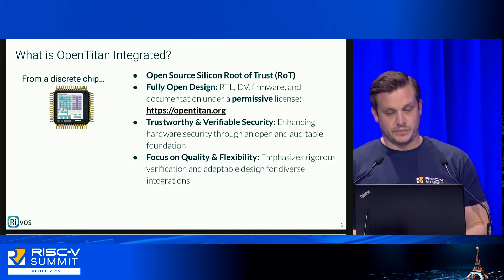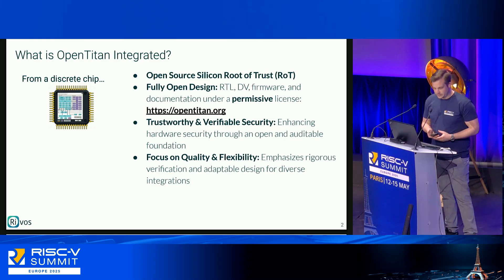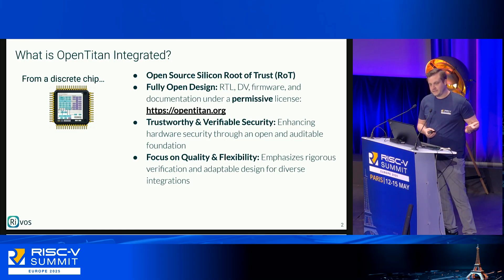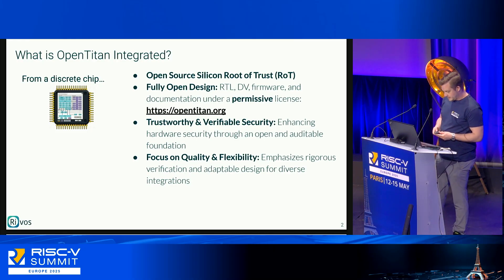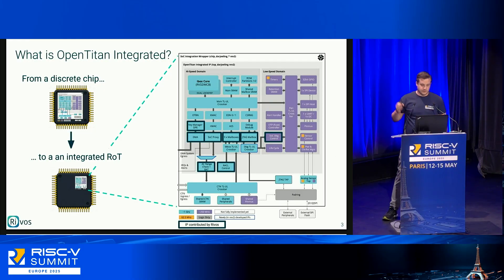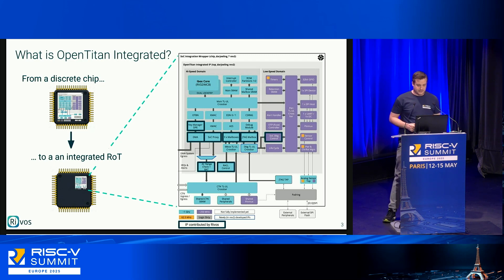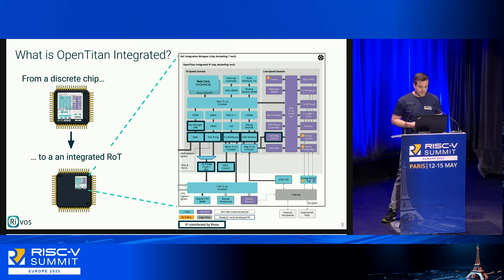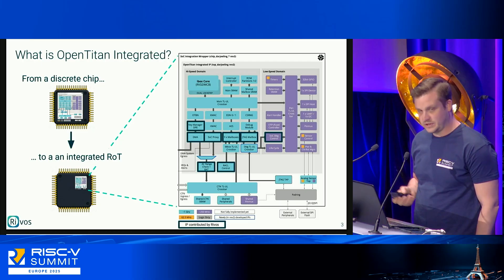OpenTitan was previously developed as a discrete chip, but that is not necessarily usable for every use case. So it has been shaped into an integrated version so that you can place it into a large SoC. On the right you can see a block diagram of OpenTitan Integrated — the Chilling implementation as the reference implementation in upstream, with highlighted blocks that are new for the integrated version that Rivos contributed to.